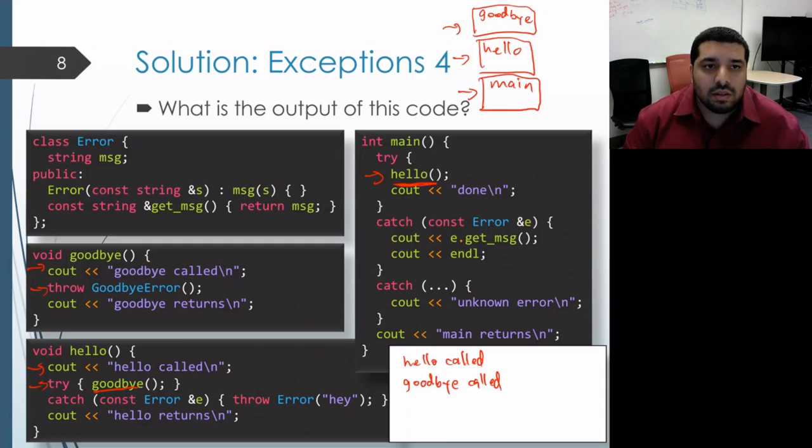We're at that call to hello. And now it checks the catch blocks to see if any of them can handle a goodbye error, and it checks them in order. So the first one only handles the error type, so that can't handle a goodbye error.